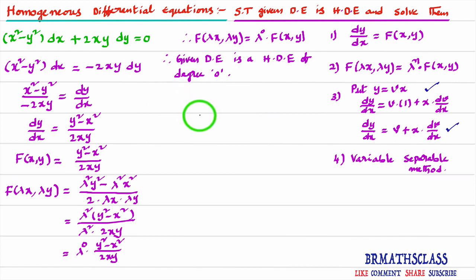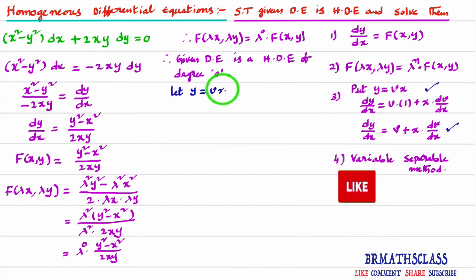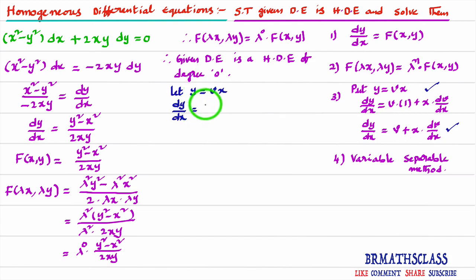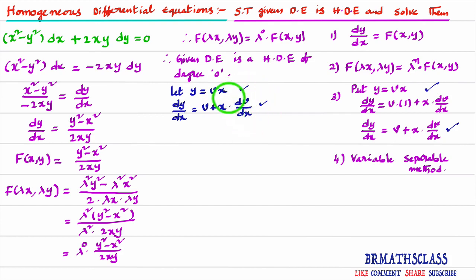Once confirmed as a homogeneous differential equation, we follow a particular procedure to solve it. First, let y = vx. Differentiating both sides with respect to x gives dy/dx = v + x · dv/dx. We now substitute both y = vx and dy/dx = v + x · dv/dx into the given differential equation.